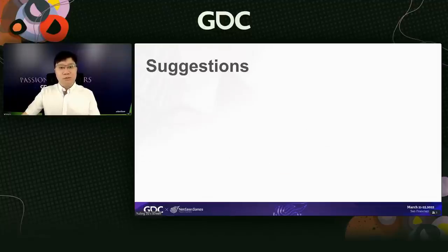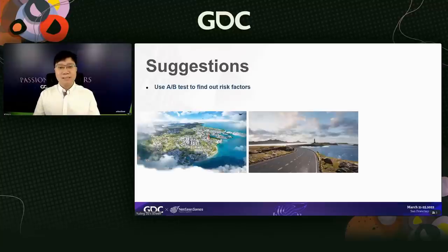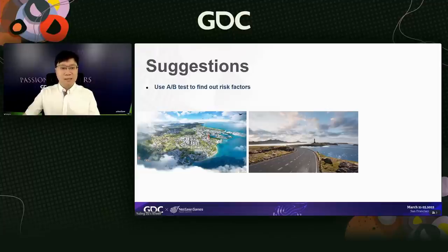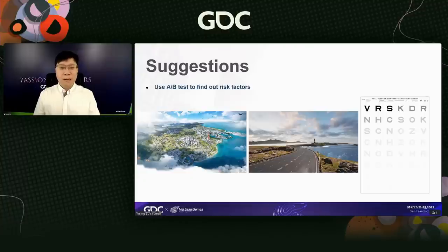So what can we do to avoid or relieve visual fatigue when developing games? Our first suggestion is conducting A-B testing using effective indicators of visual fatigue. When designing new maps, adding new elements, or making any changes to your game, you can use A-B testing to identify elements that might cause visual fatigue and reduce their impact. CFF, contrast sensitivity, and self-report are very project-friendly indicators, especially contrast sensitivity — all you need is a contrast chart or a computer.